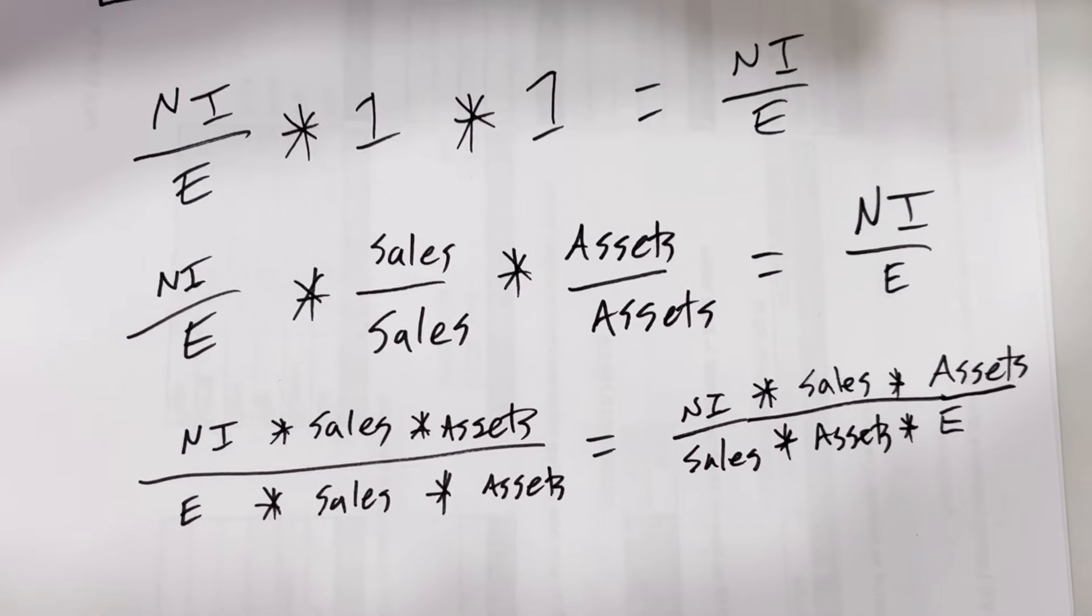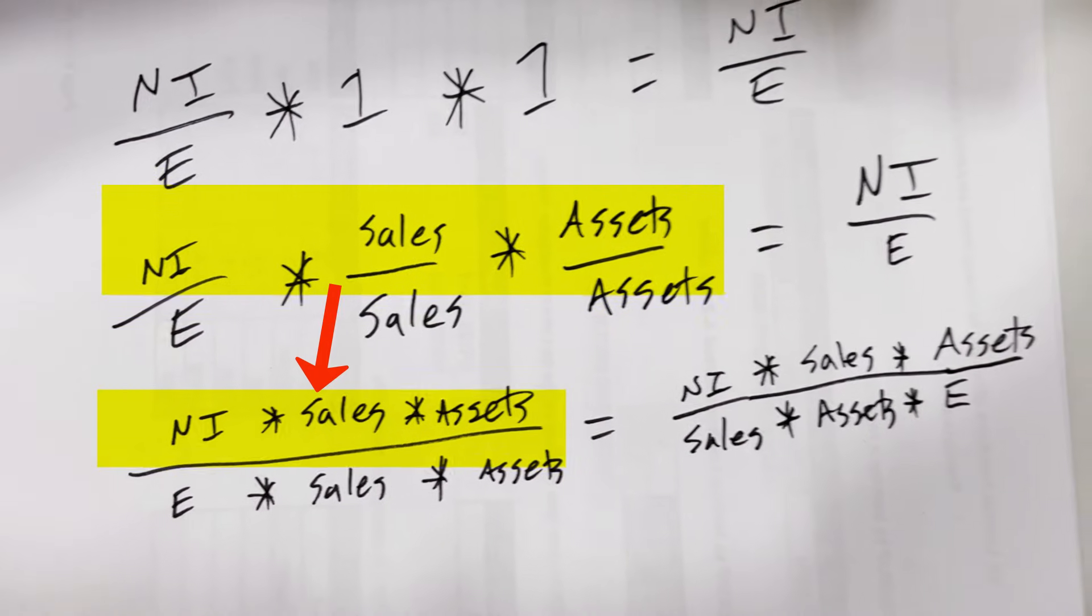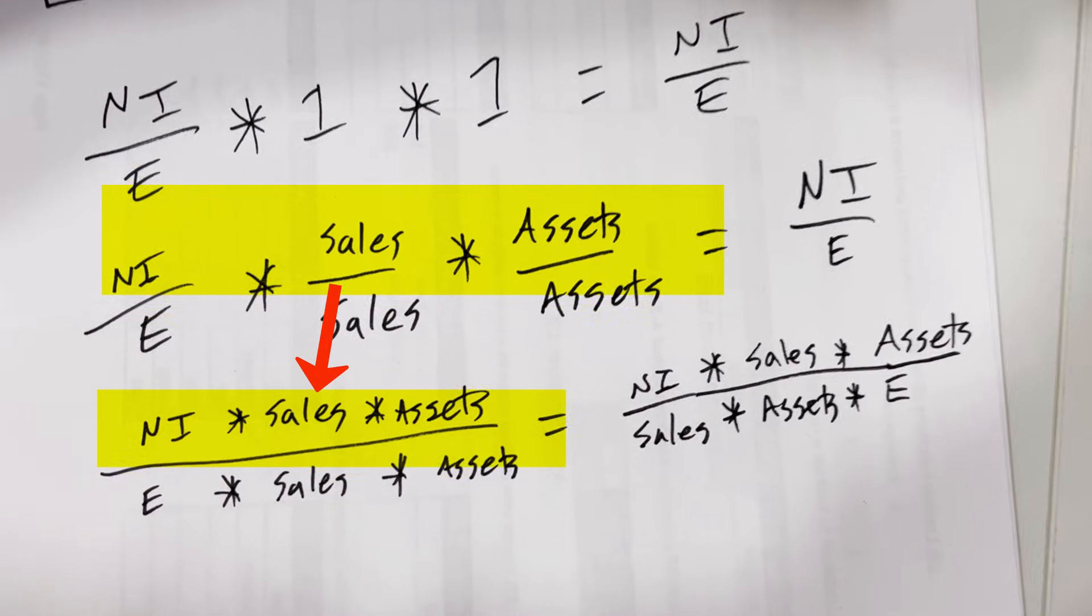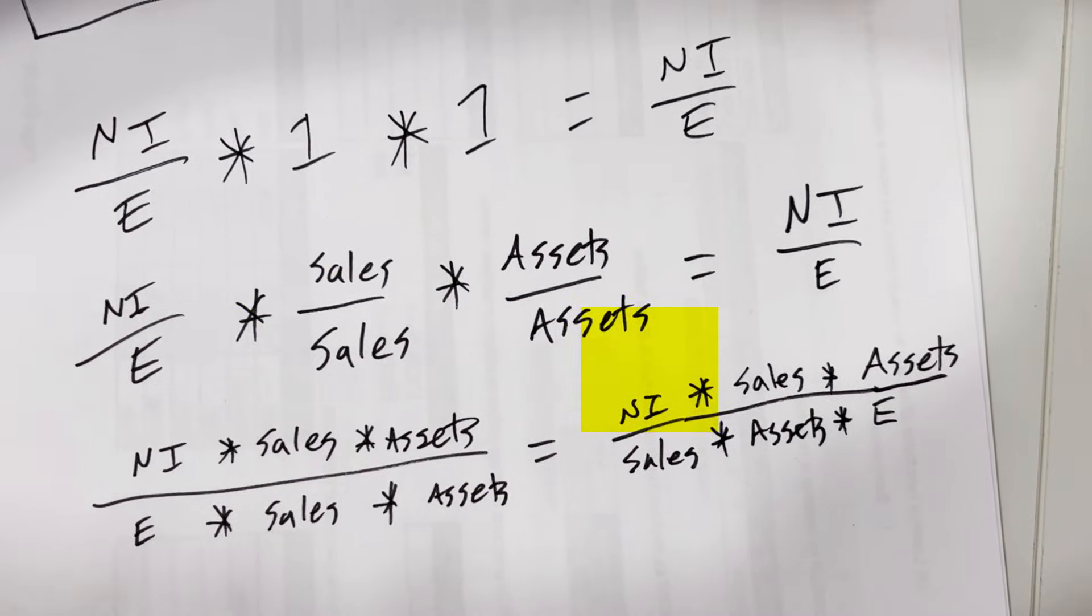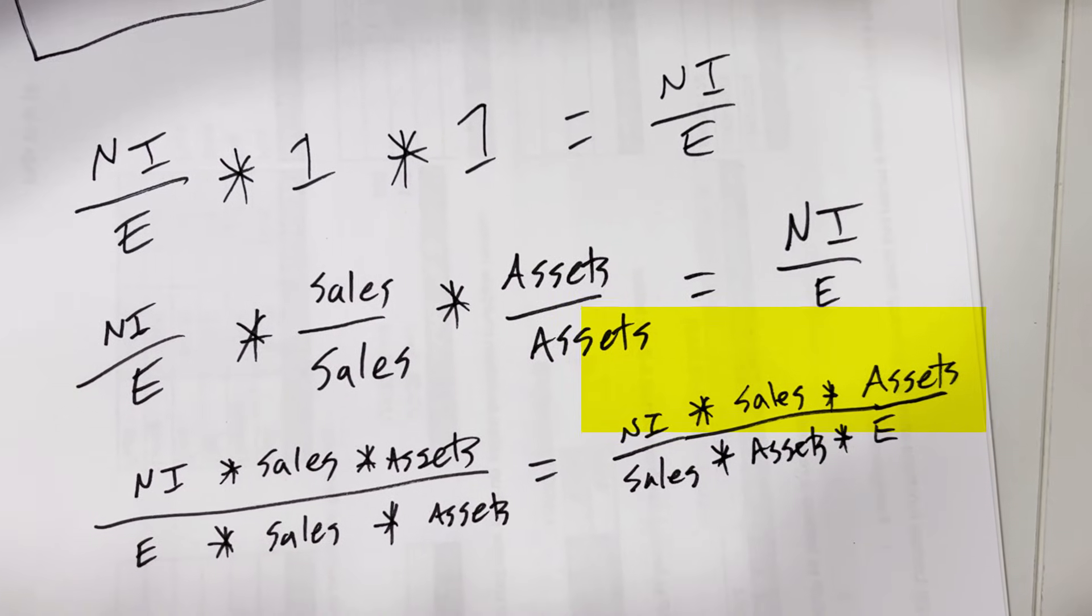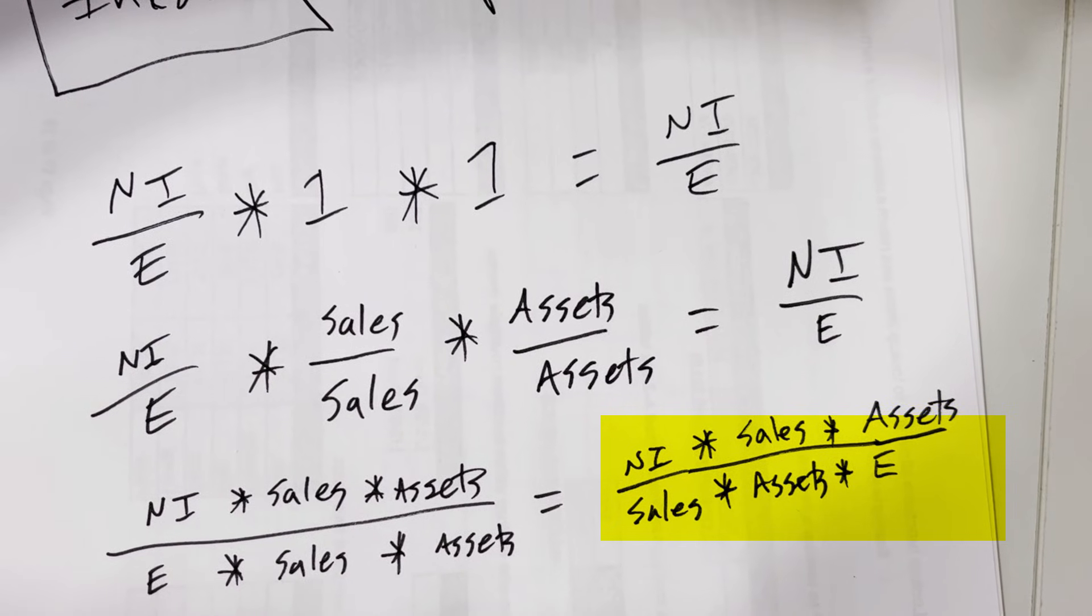Well, of course, multiplication can be done in any order in the numerator and denominator. So guess what? We're going to choose just like the DuPont analysts originally did: net income times sales times assets in the numerator and sales times assets times equity in the denominator.